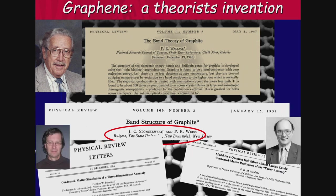In 1983, Gordon Semenoff proposed this as a condensed matter realization of three-dimensional anomalies. And in '87, Duncan Haldane proposed it as a model of quantum Hall effect without a magnetic field. He was awarded the Nobel Prize for this work. But nobody thought this would ever be realized in the lab.